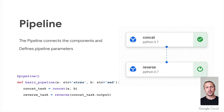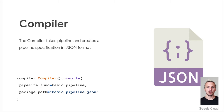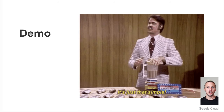The pipeline itself contains the components we created, again defined by a pipeline decorator. The output from the first component is the input for the second component. The last step needed is our compiler. The compiler takes our pipeline and creates a pipeline specification as a JSON file. That's all we need to run our pipeline. We can go to Vertex AI Pipelines in the UI, or via API or SDK, upload the pipeline specification, and the pipeline starts running — just a few lines of code.